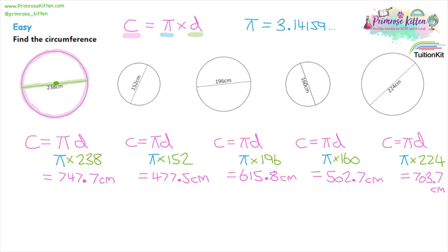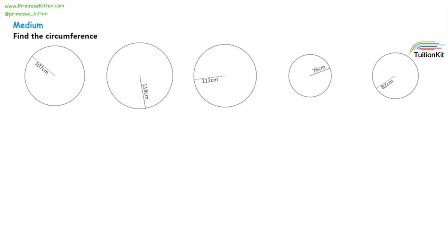Moving on to the medium questions. The formula is still circumference equals pi multiplied by the diameter. The key difference is that the number labelled on these circles — 107 centimetres — only goes halfway across. It's very important not to get this wrong: the diameter goes from one edge, through the middle, to the other side.